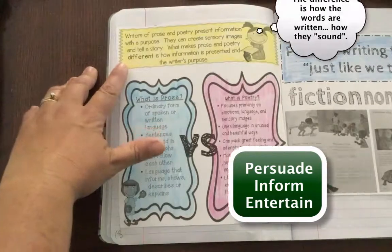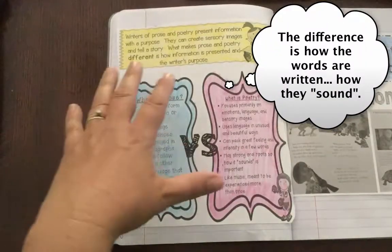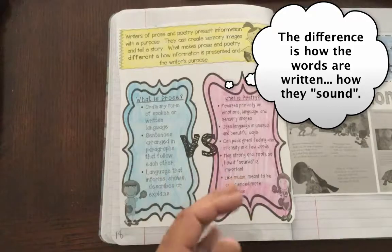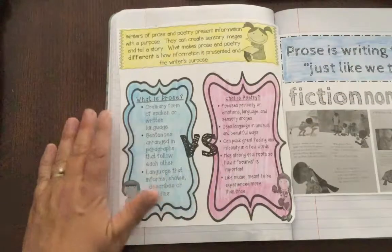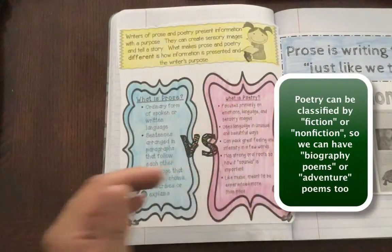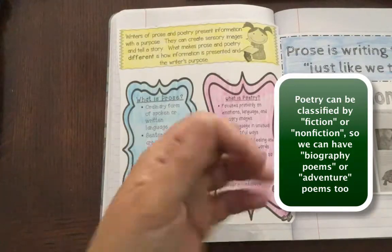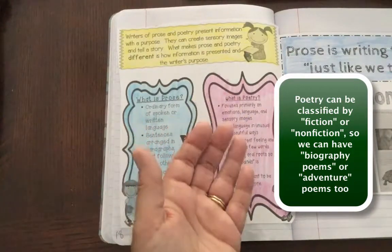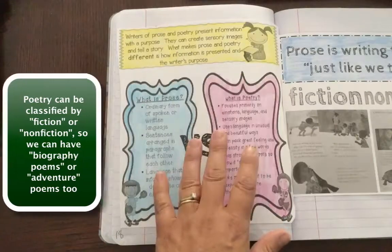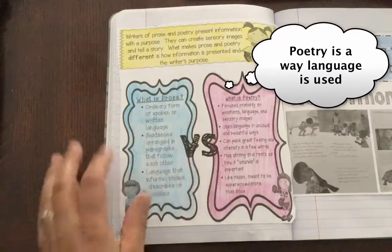What makes poetry and prose different is how information is presented and usually that purpose. I don't like to think of poetry as a genre because we can have fictional poetry and we can have nonfiction poetry. Poetry is more about how language is used.